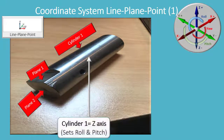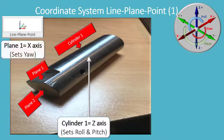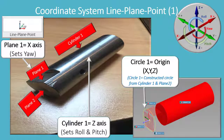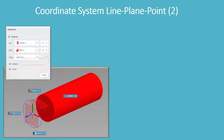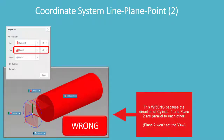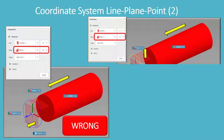Cylinder 1 equals the z-axis and sets roll and pitch. Plane 1 equals the x-axis and sets yaw. Circle 1 is a constructed circle from Cylinder 1 and Plane 2. However, this is wrong because the direction of Cylinder 1 and Plane 2 are parallel to each other, so Plane 2 won't set the offset.